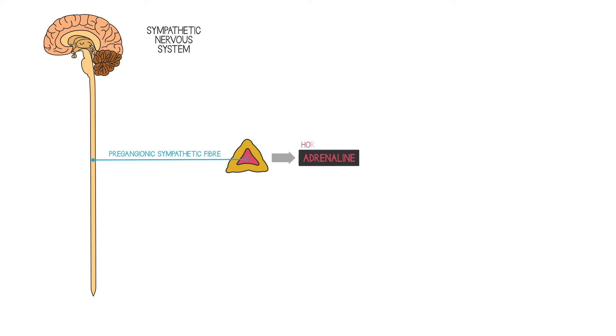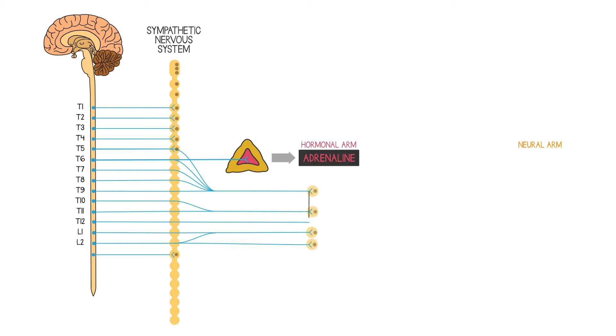Adrenaline then can be seen as the hormonal arm of the sympathetic nervous system, complementing the neural arm represented by the other sympathetic nerve fibers which travel around the body.